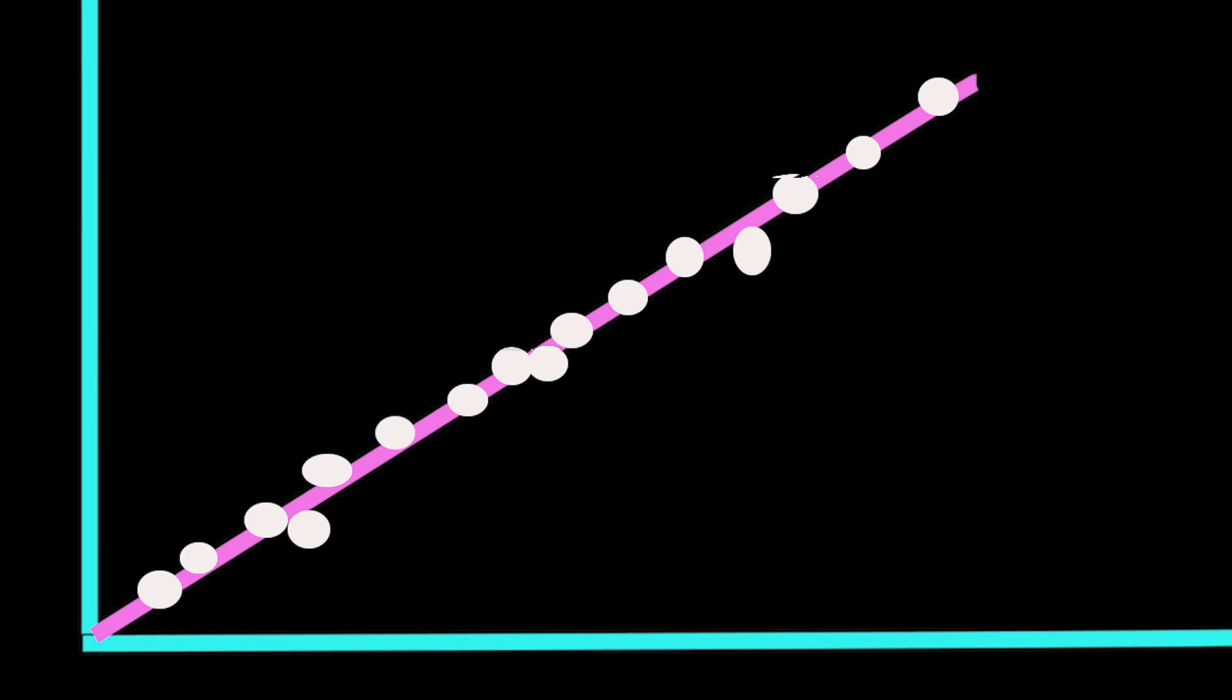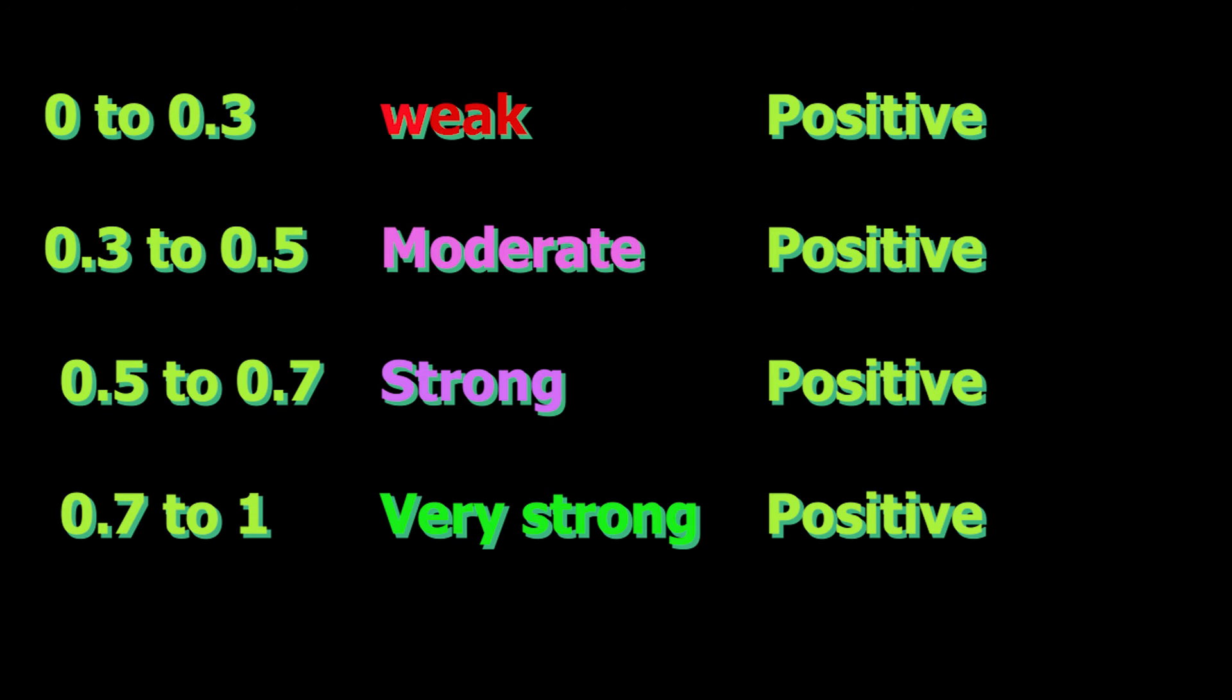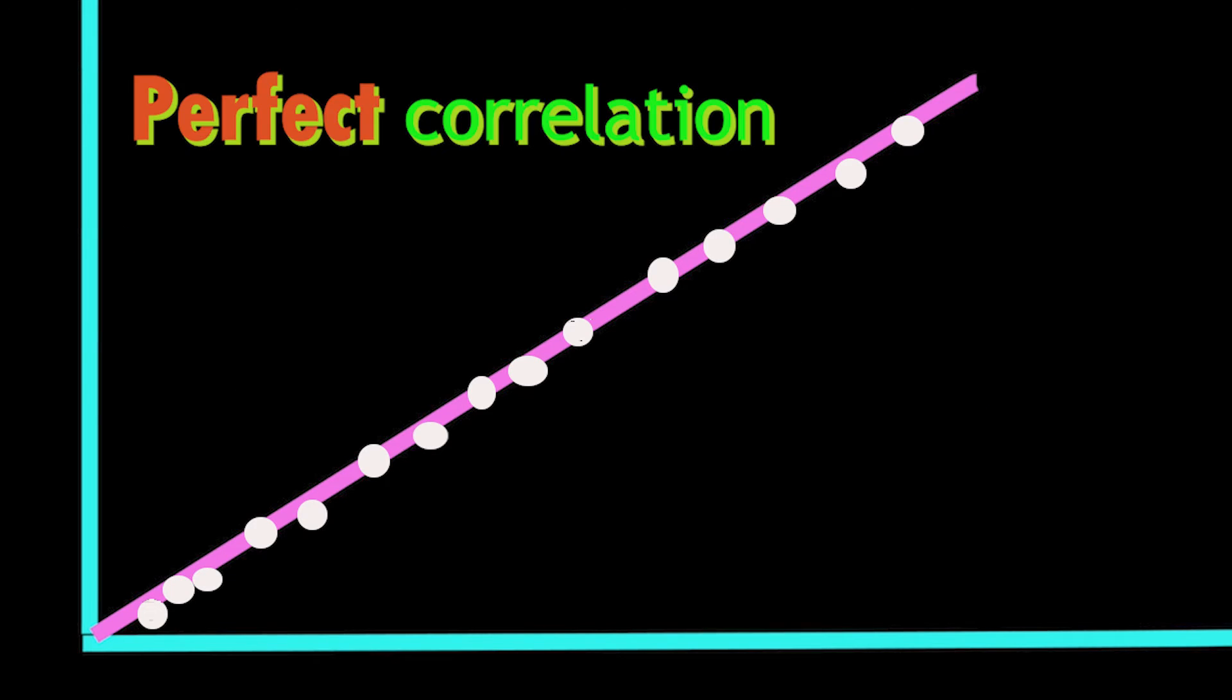The correlation coefficient tells you how closely our data fit on the line. If we have a linear relationship we will draw a straight line of best fit that takes all of our data points into account on a scatter plot. If all the points are perfectly on this line we have a perfect correlation that is what we expect.